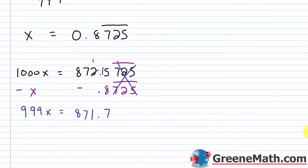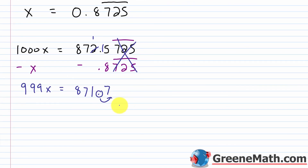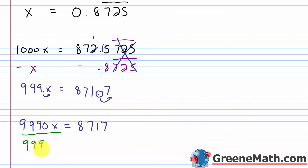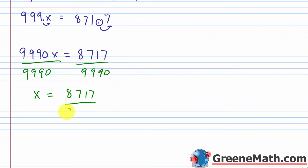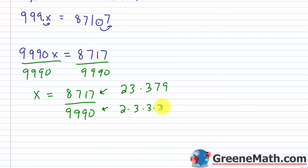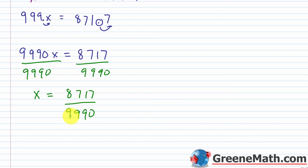Scrolling down, I multiply both sides by 10 to clear the decimal, giving 9,990x equals 8,717. Dividing both sides by 9,990: x equals 8,717 over 9,990. Factoring 8,717 gives 23 times 379, and factoring 9,990 gives 2 times 3 times 3 times 5 times 37. They share no common factors, so this is fully reduced: 8,717 over 9,990.